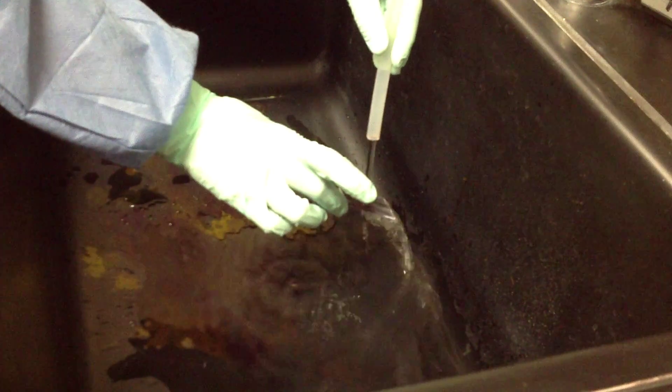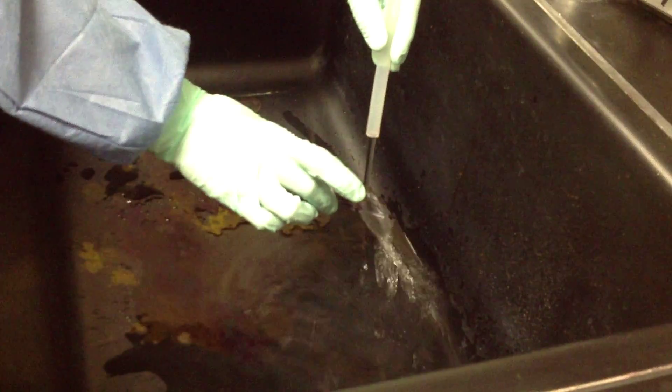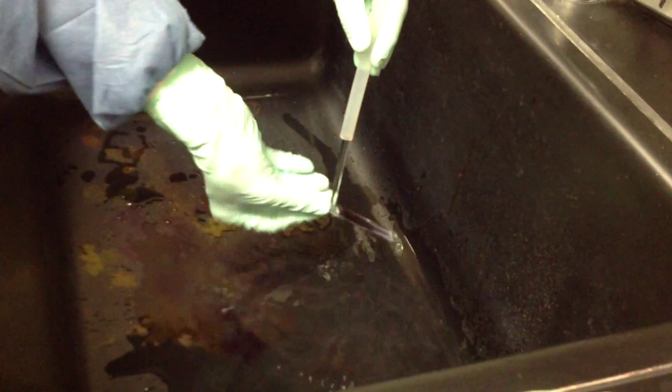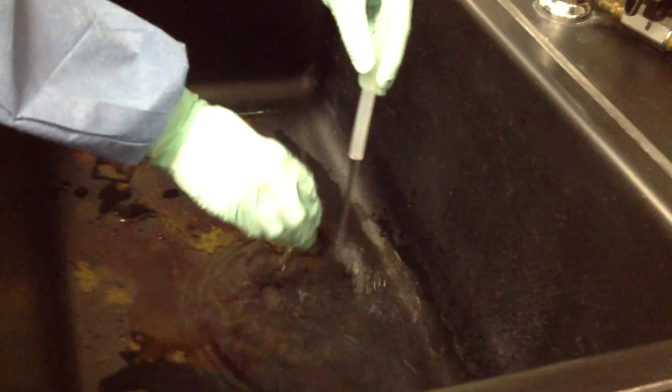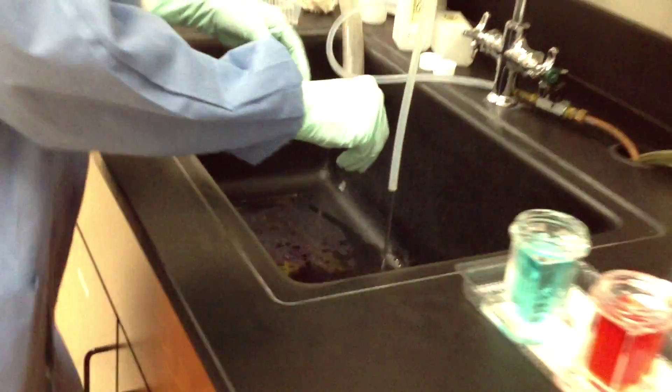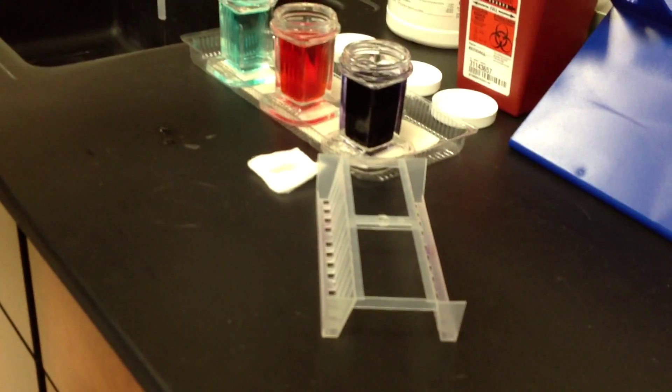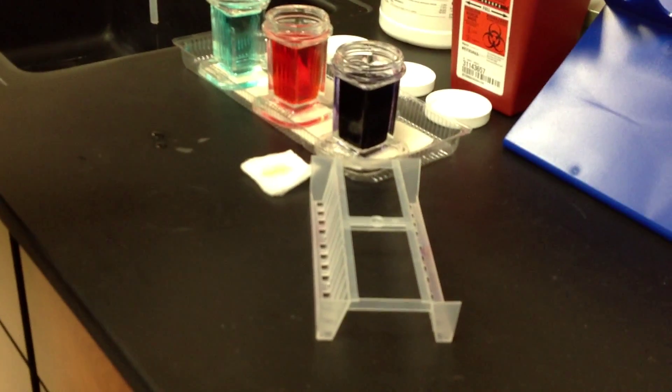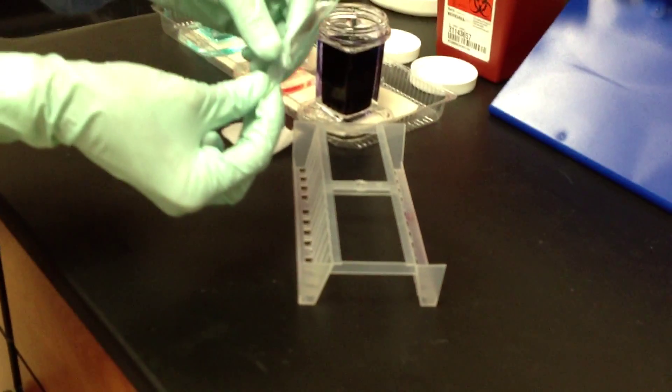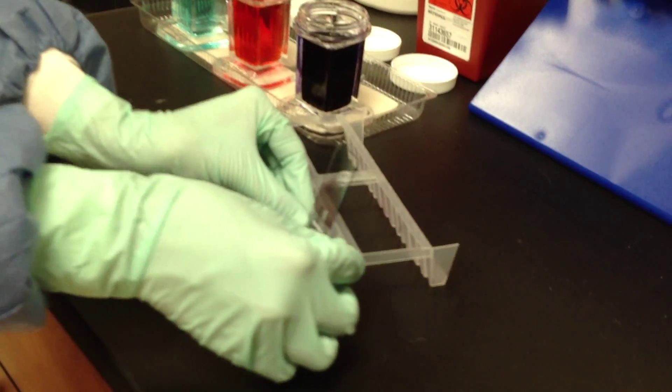At this point, you never want to blot again. It will make an impression on your blood smear and ruin it for you. We do want to hold it up on the end briefly, and we're going to set it label-side down in our drying rack. Now we have our stained slide.